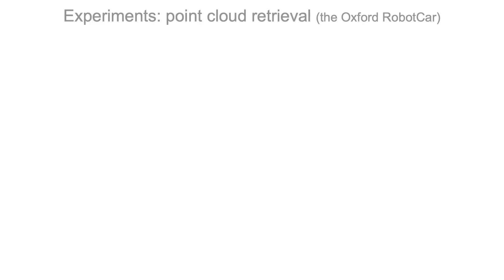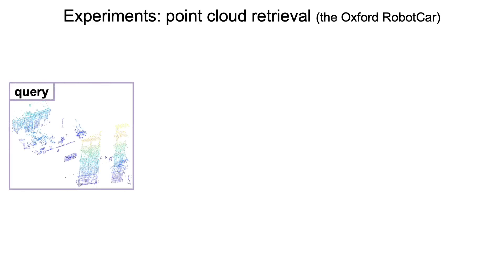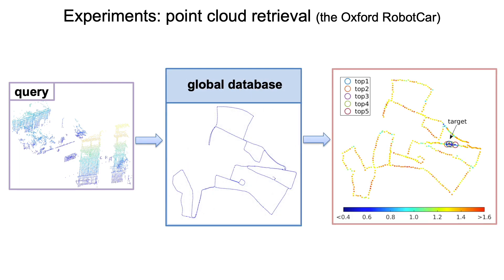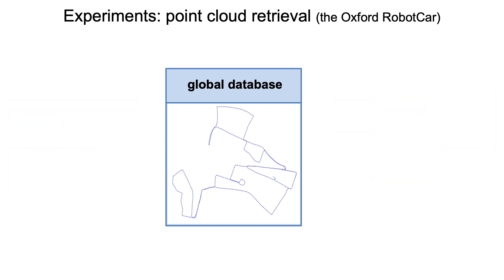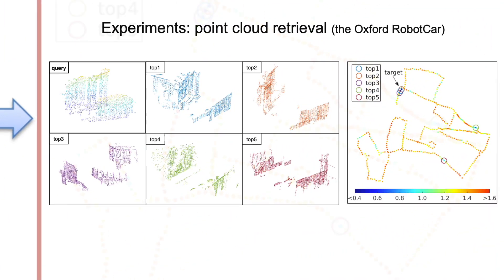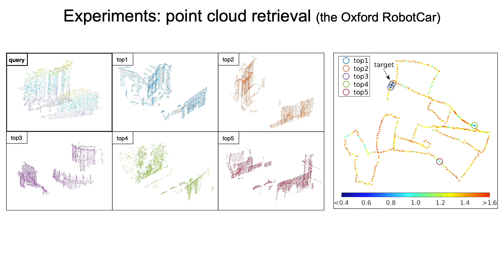Next, we will show some experimental results of our method. We first evaluate our global descriptor for the task of point cloud retrieval. Given a point cloud as a query, we compare its global descriptor against the database. The k-nearest neighbors are returned as the output of this retrieval. We can observe that despite the occlusion and rotation appearing in the query point cloud, our method can still perform the retrieval task successfully.